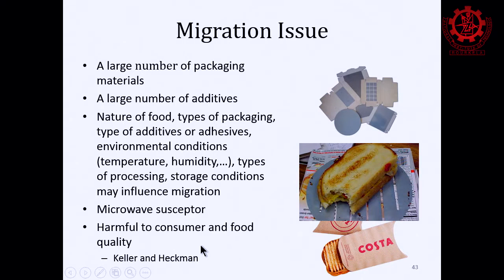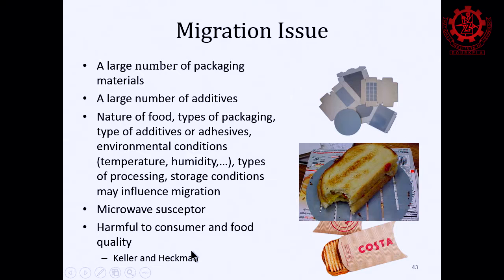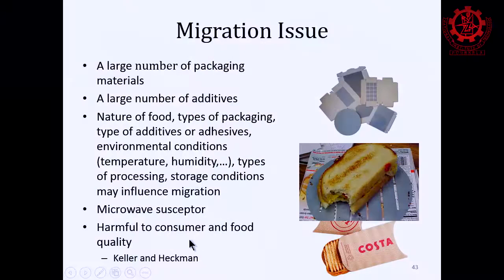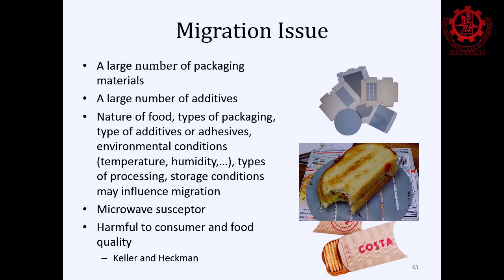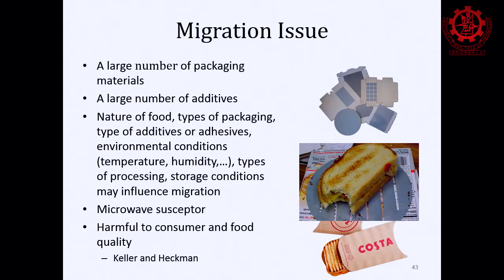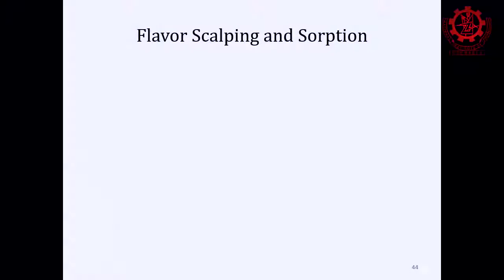In the US, a company called Keller and Heckman specializes in migration testing. Before seeking FDA approval for a new food contact material, companies typically approach this firm, specify the material and conditions of use, and receive a certificate showing migration levels or confirming absence of migration. That certificate is then submitted to the FDA for approval. A similar regulatory process may not yet exist in India.